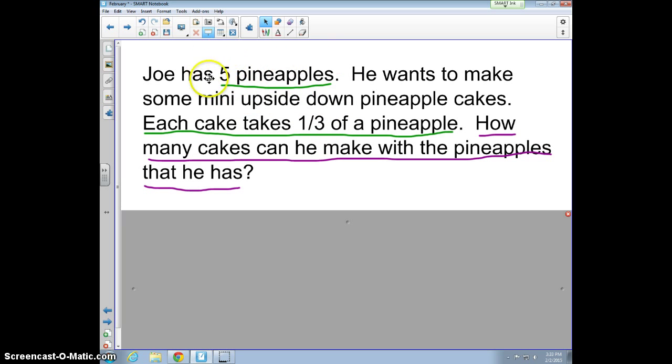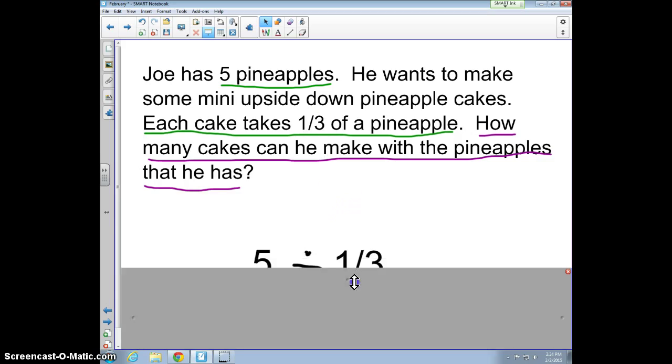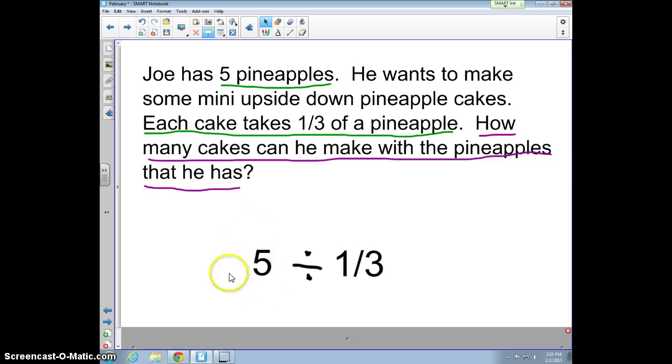The fact that I'm starting with five pineapples tells me that the dividend is five, and then I'm figuring out how many groups of one third, so that's the divisor. As a math sentence, we have five divided by one third, and that's going to give us our quotient, which is how many cakes—how many groups of one third can fit into five.